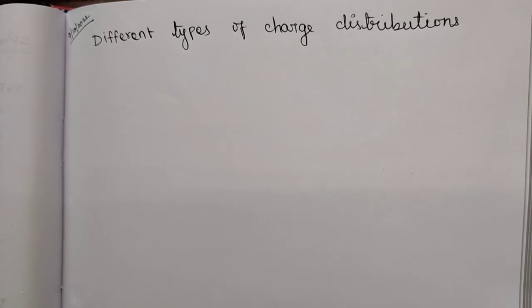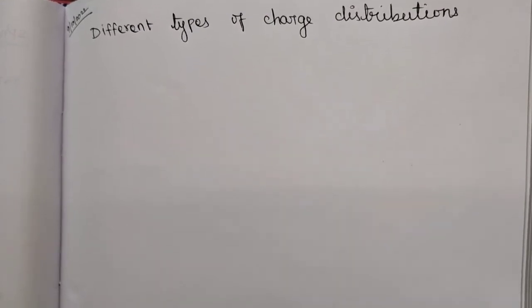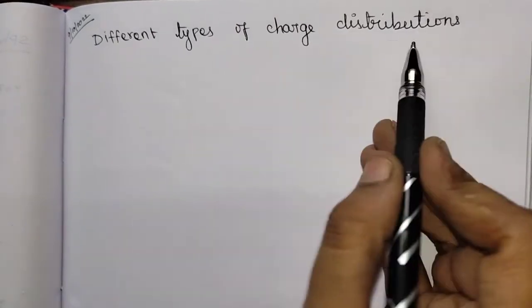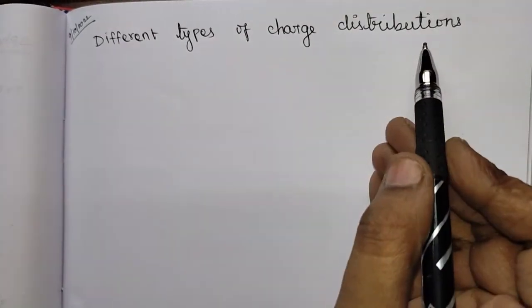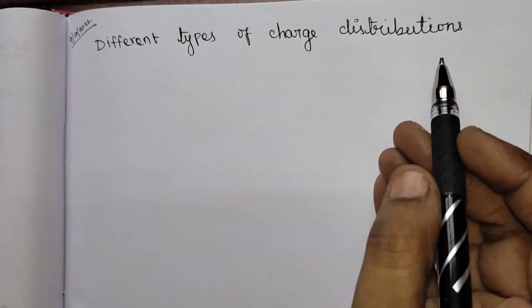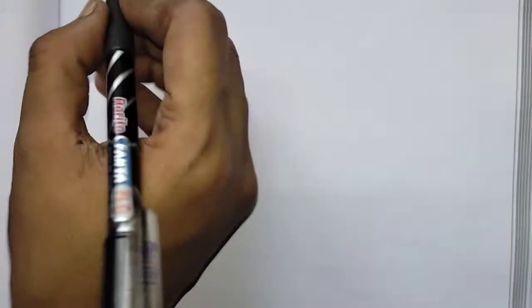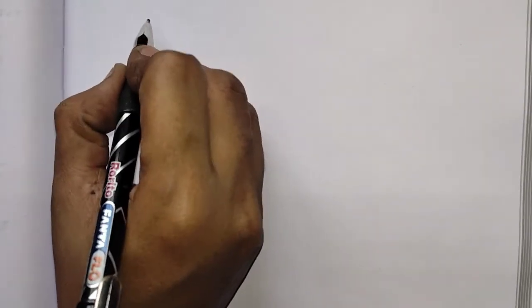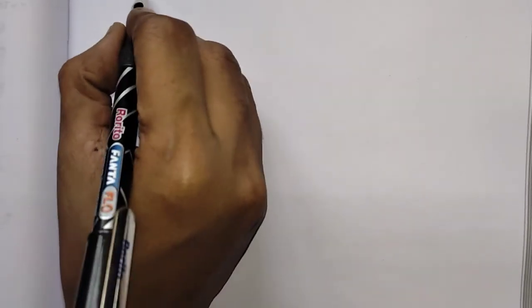Welcome, dear students, welcome to Kivitution Academy. In today's class we are going to see about different types of charge distributions in electromagnetic fields. There are three types of charge distributions.